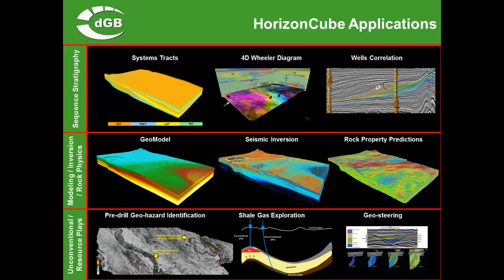You can go into sequence stratigraphic interpretations, well correlations, flattening of the data, and the well-known Wheeler transform. But you can also use the horizons for very detailed geologic model building, improving seismic inversions and thereby also improving rock property predictions. There's also a range of unconventional usages like pre-drilling geohazard identification, shale gas exploration, and geo-steering. We'll have a look at some of these applications now.